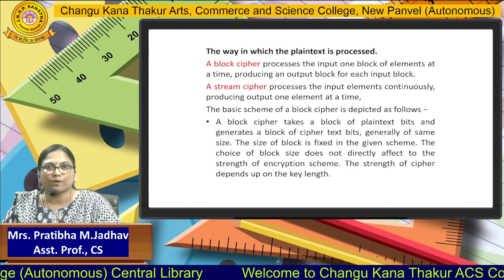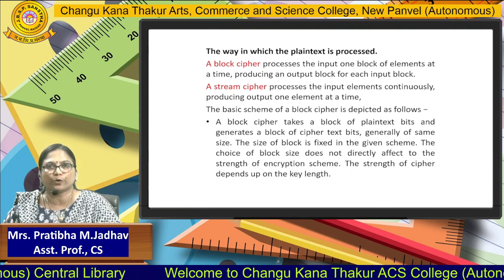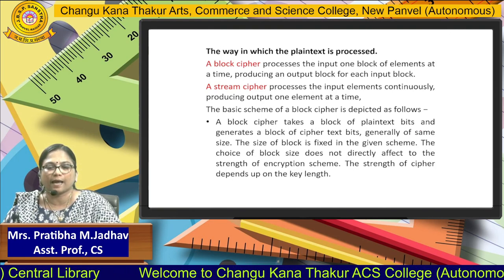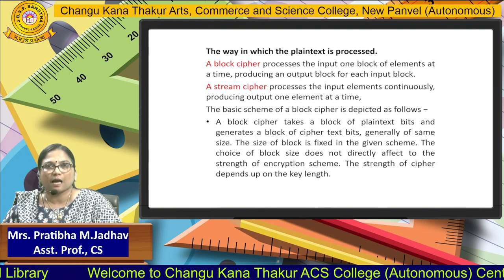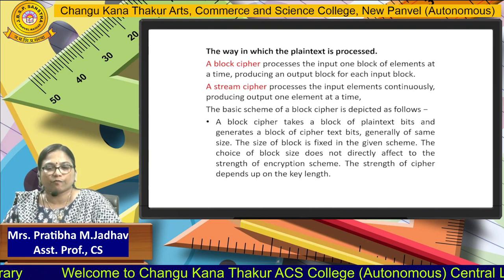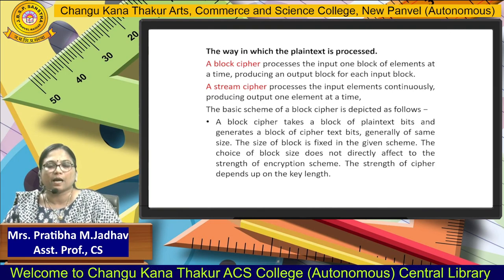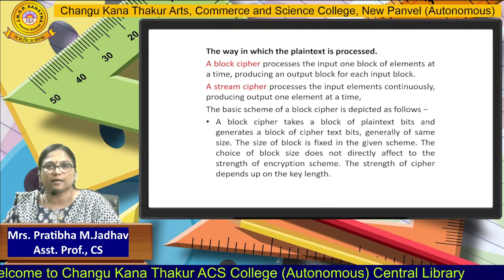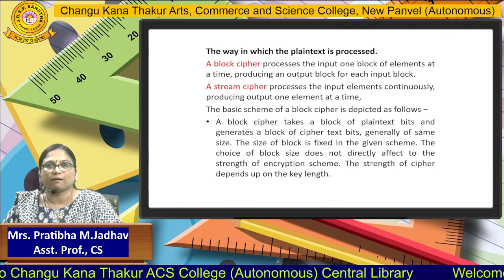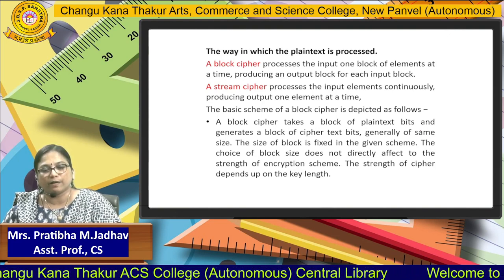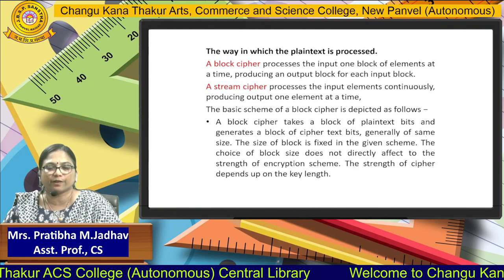The second one is the Stream Cipher, which processes one element at a time — basically only one letter at a time it will replace. The basic scheme of Block Cipher is where a block of plaintext bits are generated into a block of cipher text.